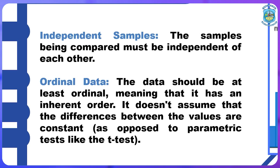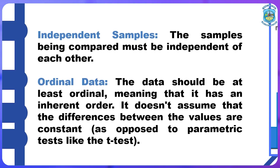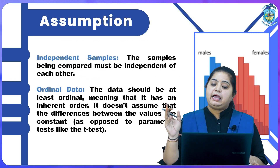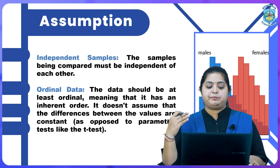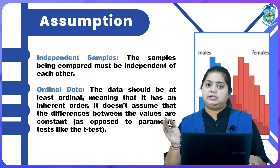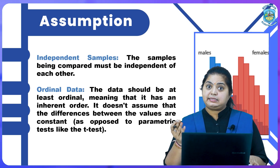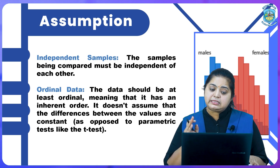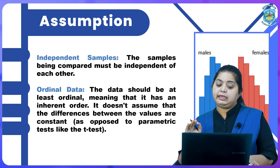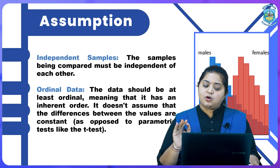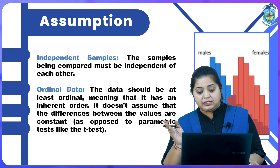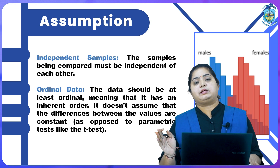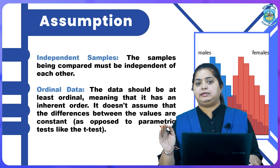There are two categories of assumptions. The first is independent samples — the samples being compared must be independent of each other. The second assumption is ordinal data — the data should be at least ordinal, meaning it has an inherent order. It does not assume that the differences between values are constant, as is supposed in parametric tests like the T-test.